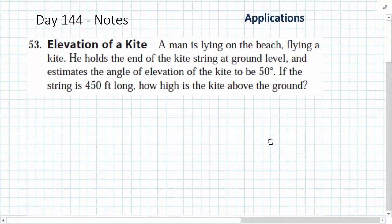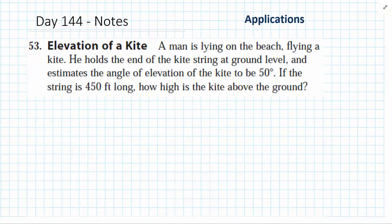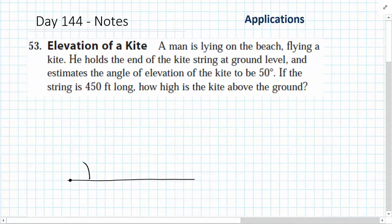In this case, number 53, a man is lying on the beach flying a kite. He holds the end of the kite string at ground level and estimates the angle of elevation of the kite to be 50 degrees. So I'm going to assume that this dot here on my page is the man lying on the beach, and the angle of elevation must be 50 degrees. Remember, angle of elevation means that it's an angle measured off of a horizontal, facing upward like this, and 50 degrees.